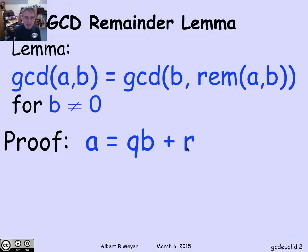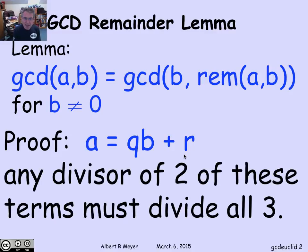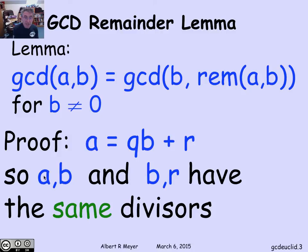If you look at this simple expression, what becomes apparent is that if you've got a divisor of two out of three of these terms, then it's going to divide the third term. For example, if you have a divisor of b and r, then the sum of those two things is also going to have the same divisor, which means that a will have that divisor. If something divides both a and b, then it divides r. And if it divides b and r, it divides a.